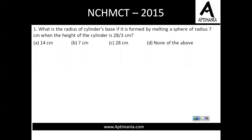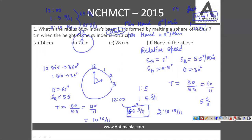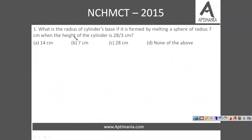The first question is: what is the radius of a cylinder's base if it is formed by melting a sphere of radius 7 cm, when the height of the cylinder is 28/3 cm? When someone changes a figure into another shape, the volume is something which remains constant.